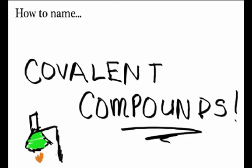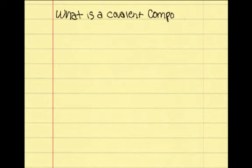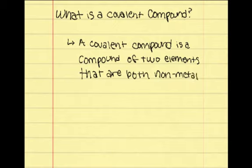How to name covalent compounds. A covalent compound is a compound of two elements that are both non-metals. The non-metals can actually be found to the right of the bolded line on the periodic table.